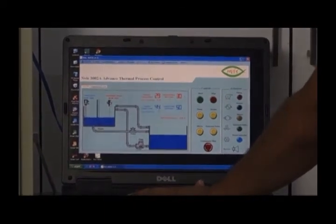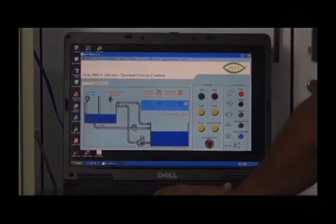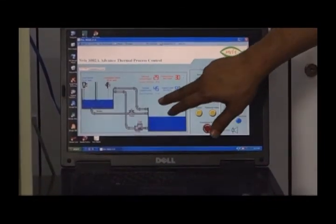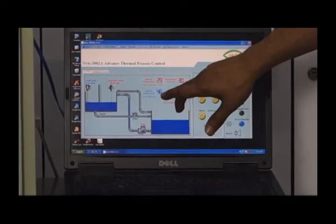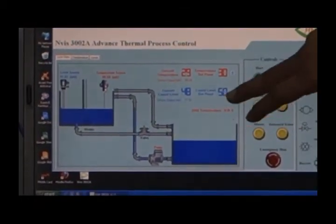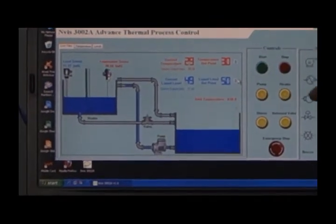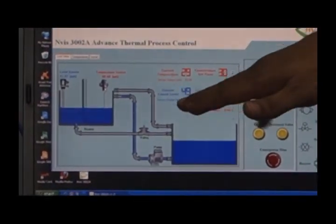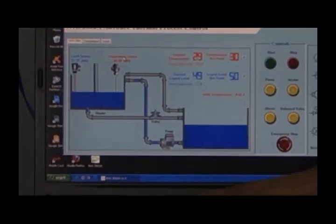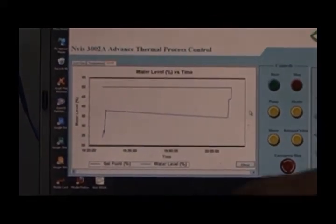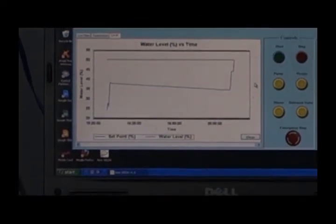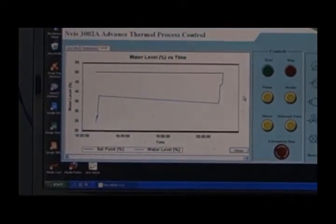Click on start process. If you want to change your set point, you can vary from here. Right now it's 50%. Process has started. Your level is right now 46 something, so pump has turned on and it's trying to remove the error by going on and off, trying to maintain the water level at 50%. Once it has reached, the graph shows how it's achieving your set point of liquid level.